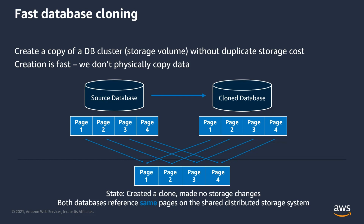Additional storage is allocated only when data changes on either the source or the cloned Aurora cluster. The blue boxes are the data pages on the Aurora shared distributed storage system, and there are pointers created to these data pages from the source and the clone cluster. When the clone is freshly created, both the source and the clone cluster refer to the same data pages for read operations.